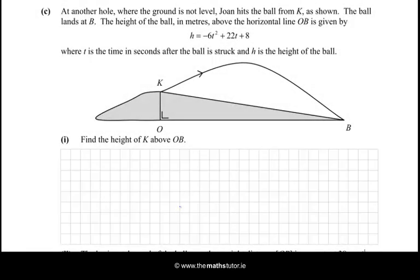At another hole, where the ground is not level, Joan hits the ball from K, as shown. The ball lands at B. The height of the ball in metres above the horizontal line OB is given by H = -6T² + 22T + 8, where T is the time in seconds after the ball is struck, and H is the height of the ball. So, find the height of K above OB.